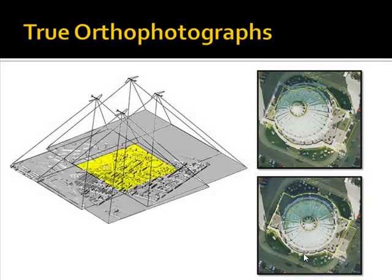Not all orthophotographs are created equal. There's a difference between orthophotographs and true orthophotographs. In true orthophotographs, multiple overlapping images are taken to remove all distortion. The top image shown is a standard orthophotograph with X and Y coordinates for accurate measurements, but you'll notice building lean. The bottom image represents a true orthophotograph, where considerable processing has been done to remove that building lean.